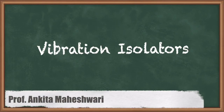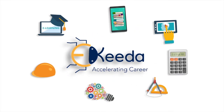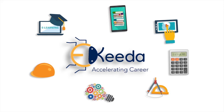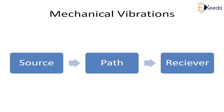Hello everyone. In this video we'll discuss about vibration isolators. Mechanical vibrations can be produced because of various factors such as imbalances, misalignment, loosenesses, overwear, and various other factors. Whenever there are high levels of vibrations, they create noise and they can also lead to the failure of the machine. So both things are obviously undesirable.